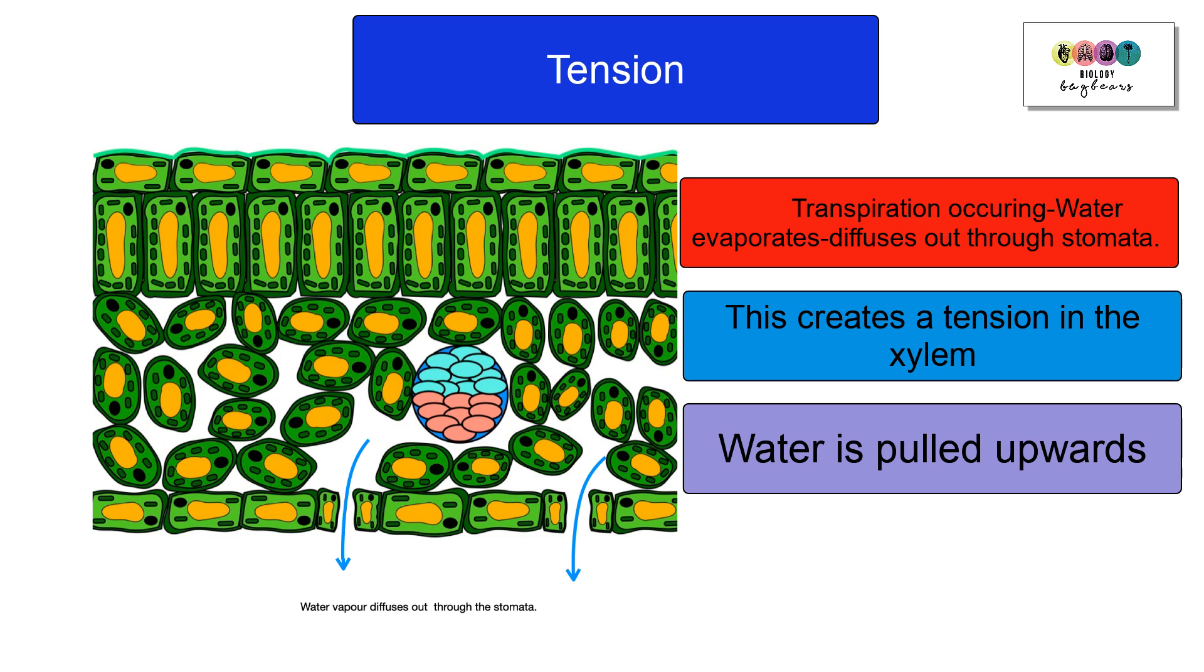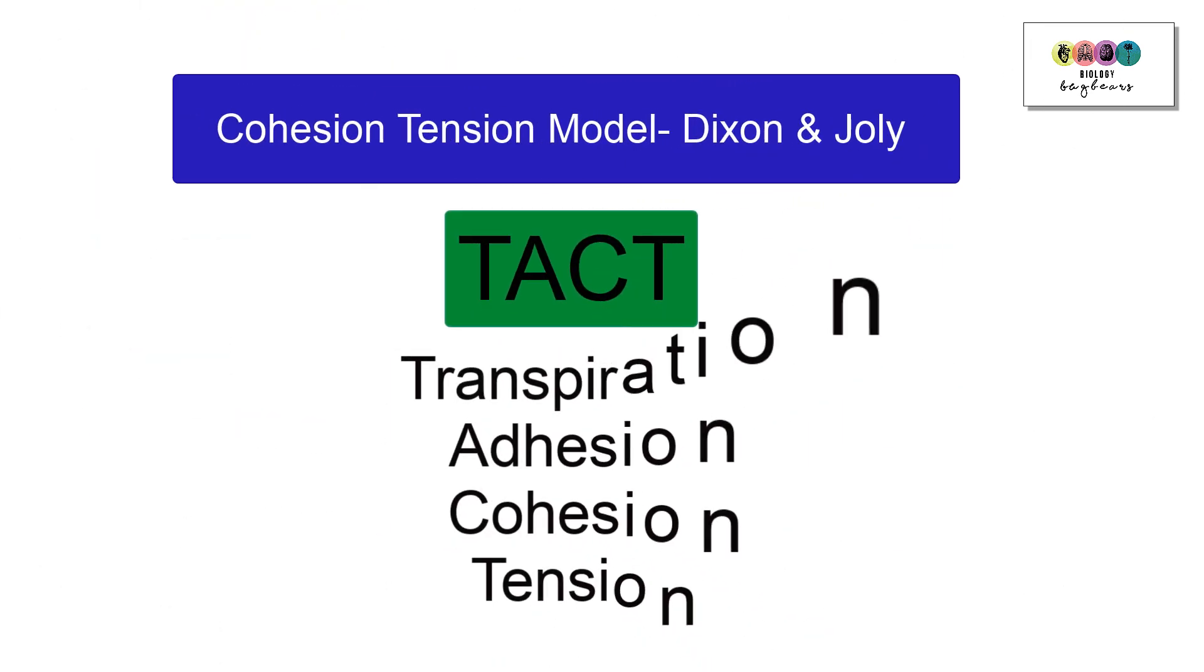It's very easy to summarize the cohesion tension model. Just know that it was put forward by Dixon and Joley, those two Irish scientists, and write down TACT. That means you're going to be able to remember to write about transpiration, adhesion, cohesion, and tension.